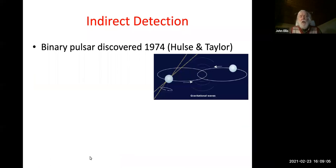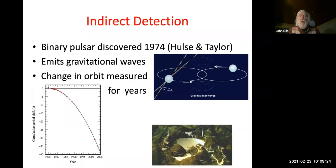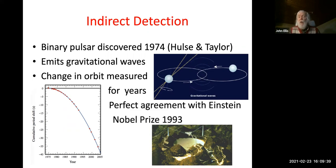The first detection of gravitational waves was indirect. In 1974 Hulse and Taylor observed a binary pulsar system, and as the two neutron stars orbit each other they emit gravitational waves. This changes the orbit, and the change has been observed over many years using the Arecibo radio telescope, which tracked the system for decades. Those observations revealed perfect agreement with Einstein's prediction, and for that Hulse and Taylor received the Nobel Prize in 1993.